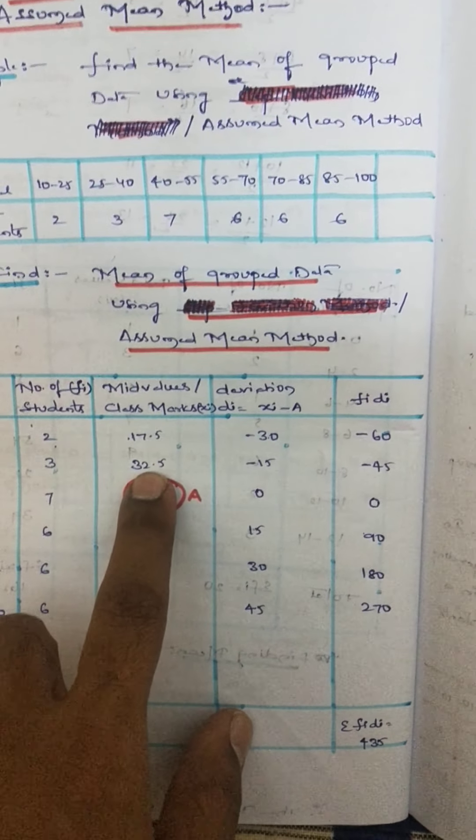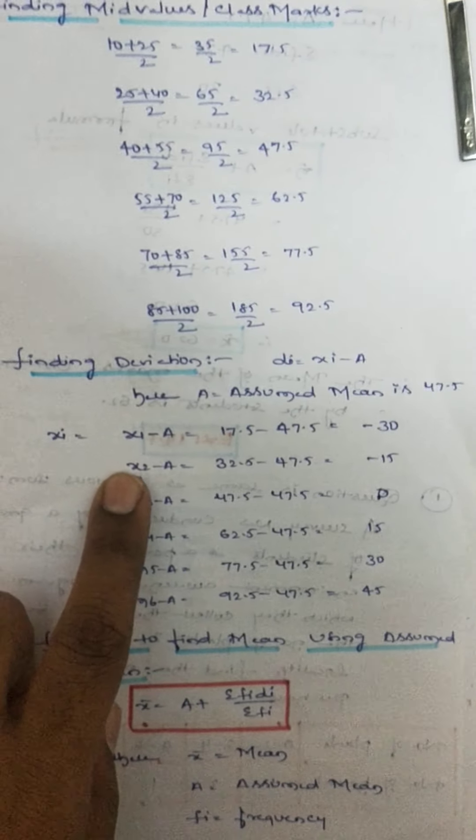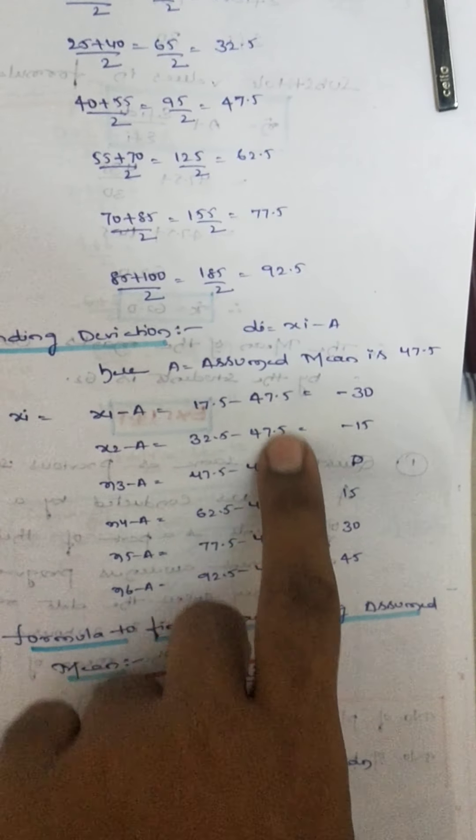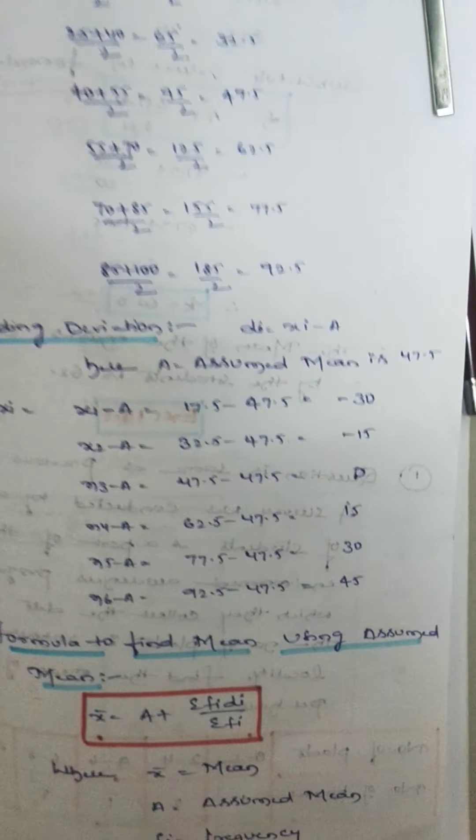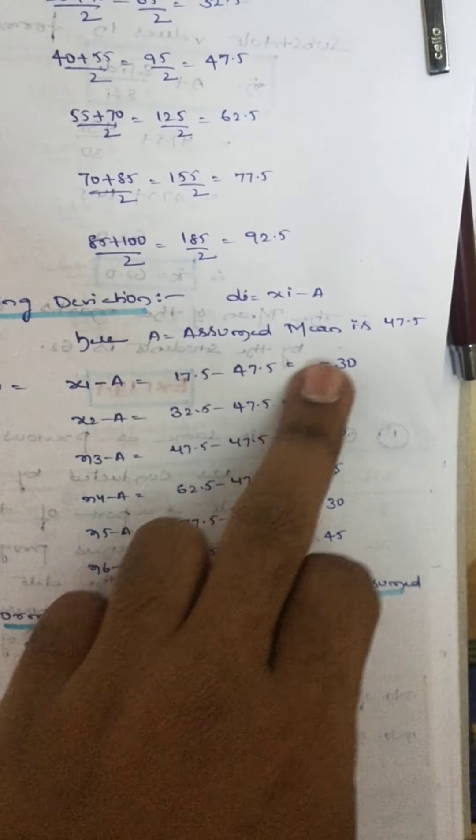Second value, 32.5 is the x value, that is my second value x2. So 32.5 minus 47.5. The 47.5 will be the same for all values because that one we have taken as A. Take the difference of these two and whatever result we got, mention it in the fourth column.